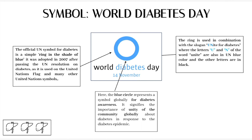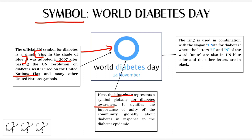Now coming to the symbol of World Diabetes Day. The official United Nations symbol for diabetes is a simple ring in the shade of blue, which we can see in this picture. This symbol was adopted in the year 2007 after passing the United Nations resolution on diabetes. The blue color was chosen as it is also used on the United Nations flag as well as in many other United Nations symbols. This blue circle represents a symbol globally for diabetes awareness, and it signifies the importance of unity of the community globally in respect of the diabetes epidemic.